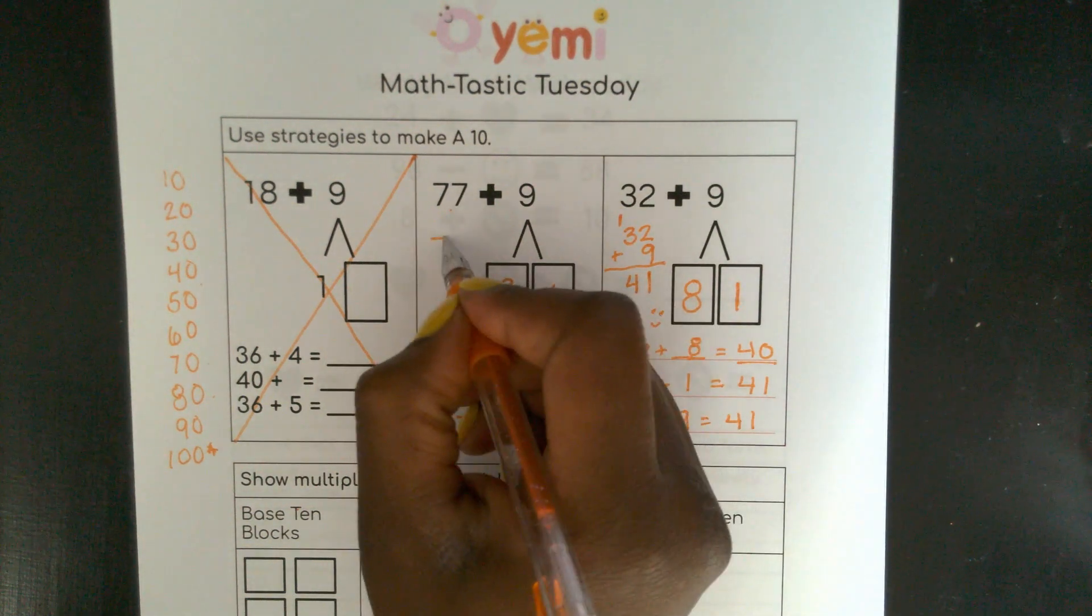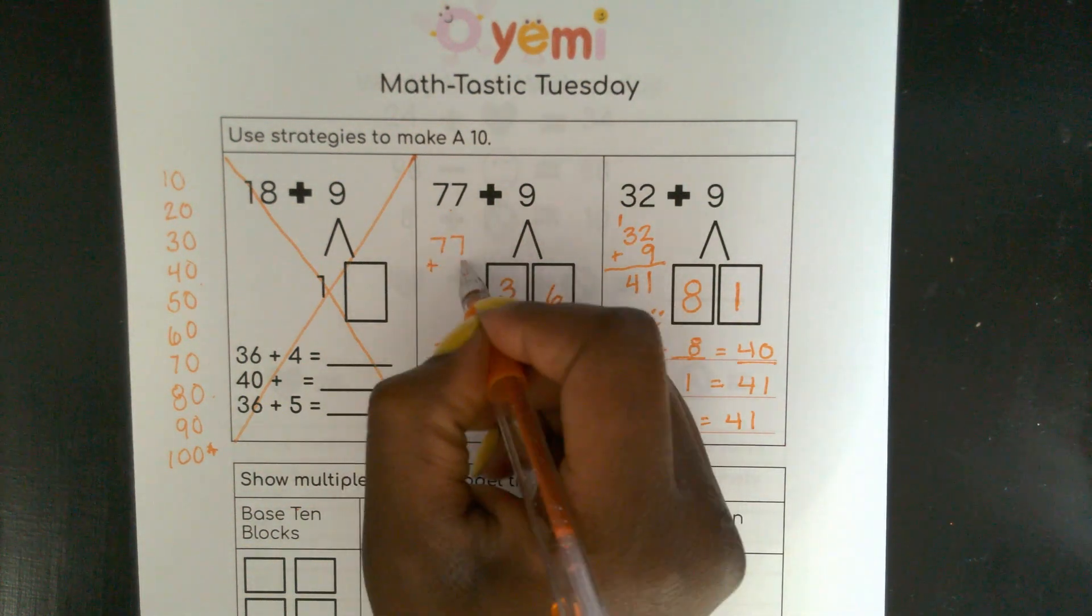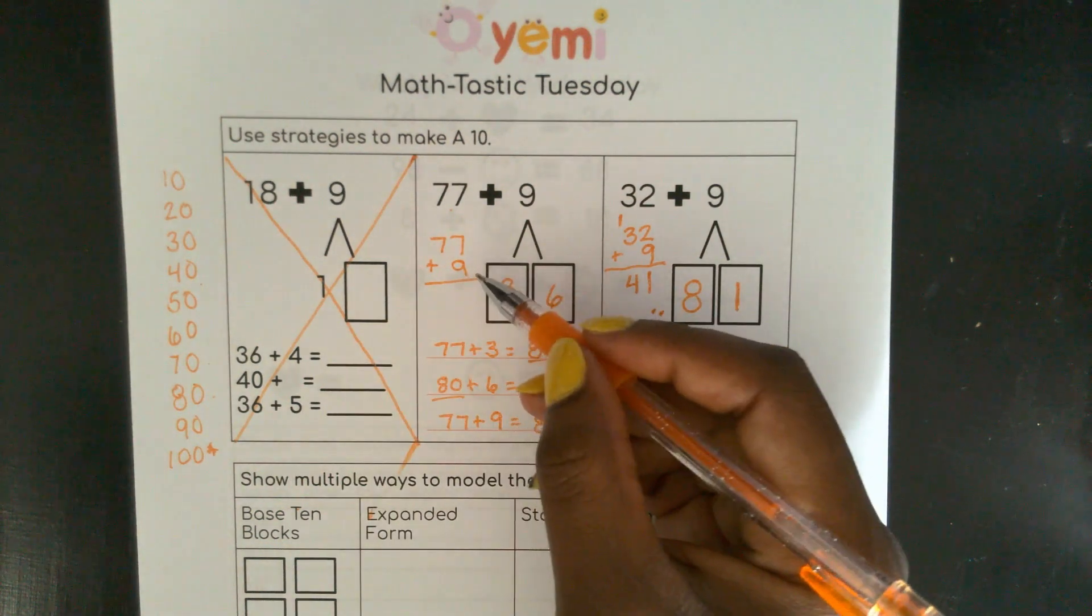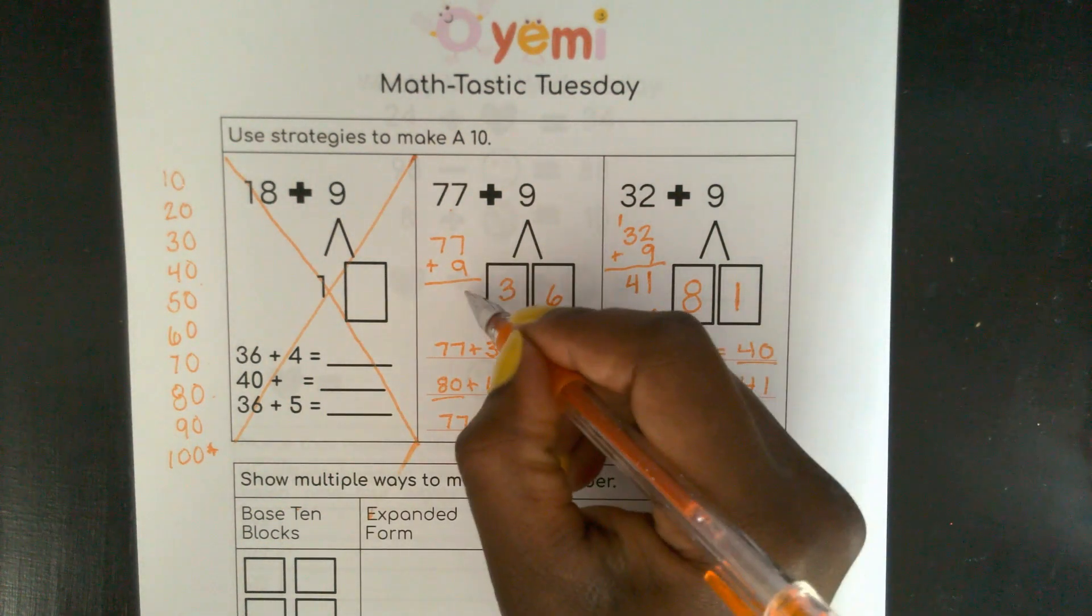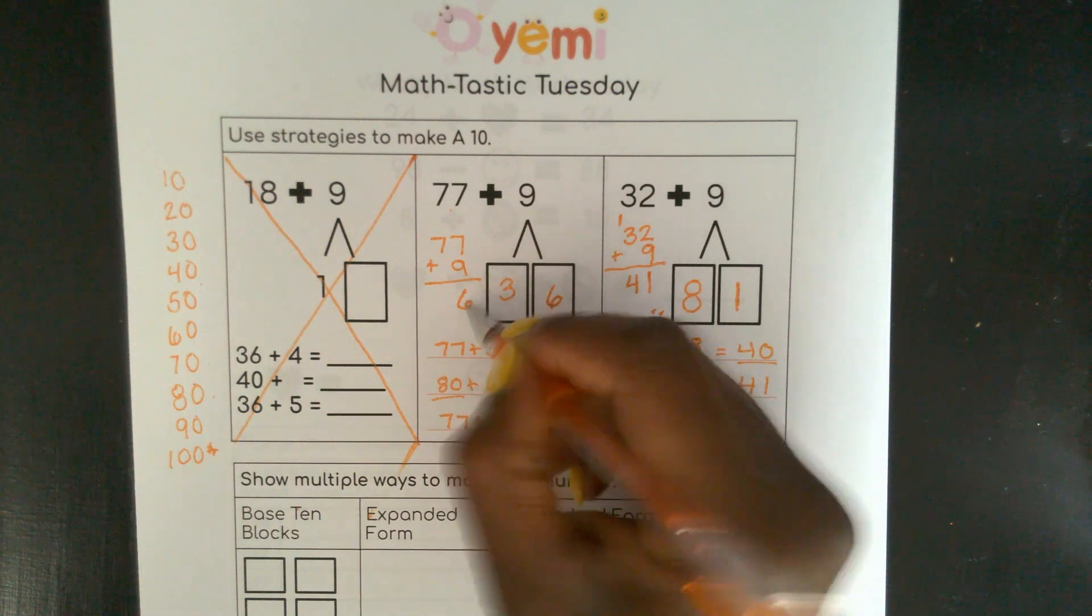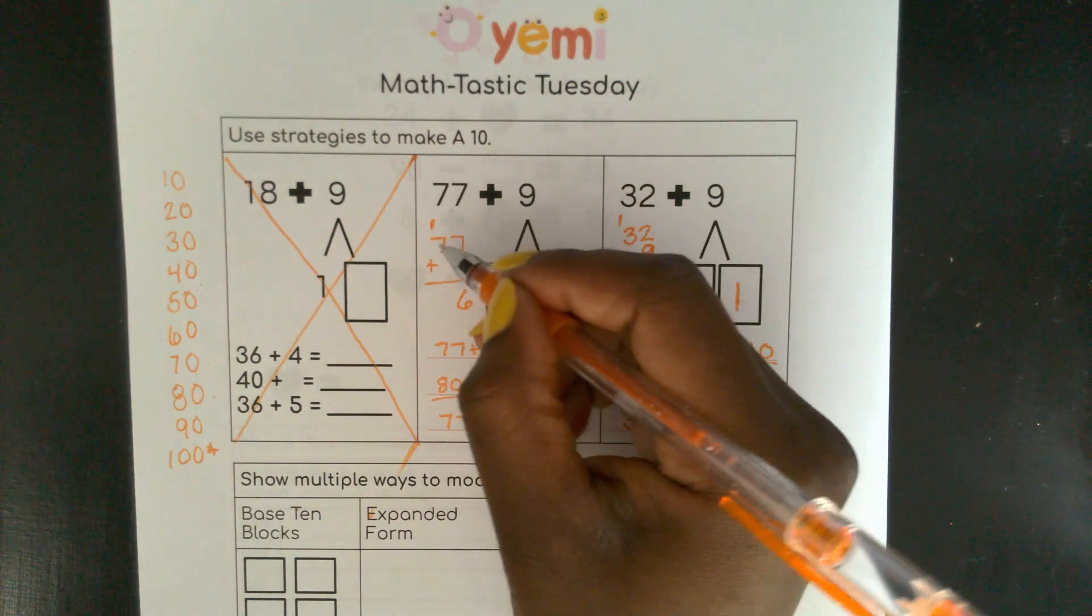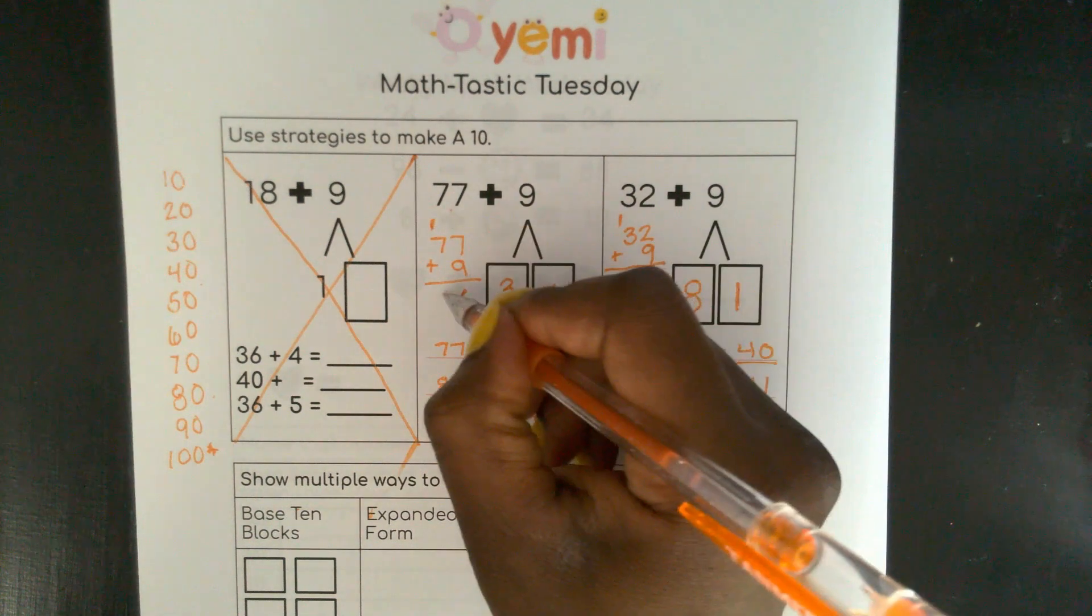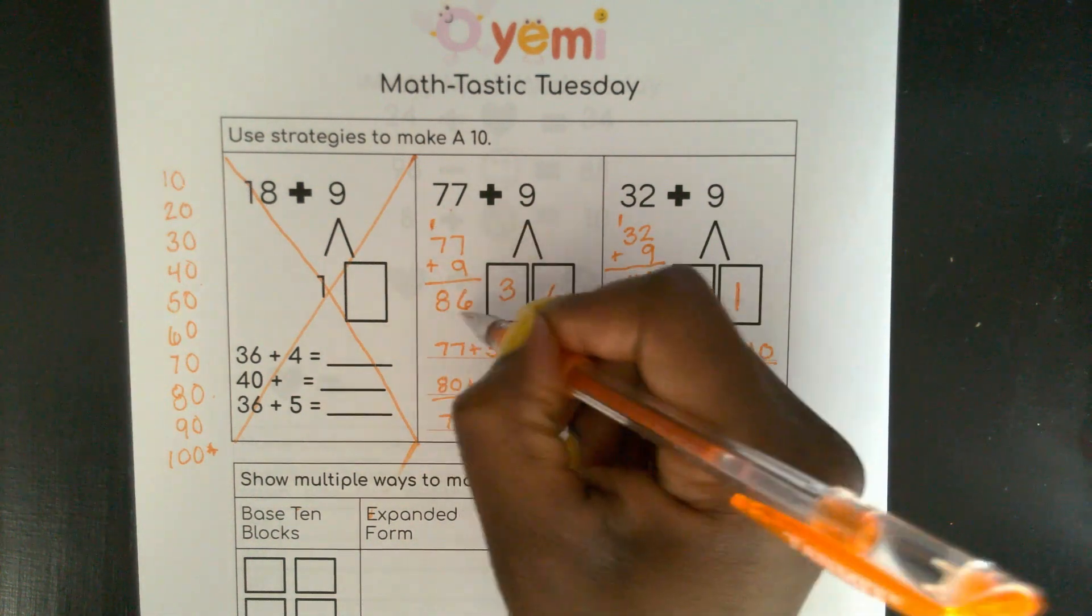Same thing here, 77 plus 9. I can do standard algorithm. This would give me 16. So I put my 10 over here in the tens place. So now I have 70 plus 10. That would give me 80 for 86.